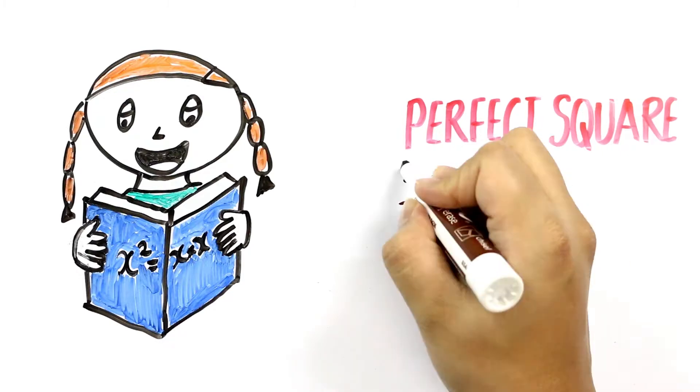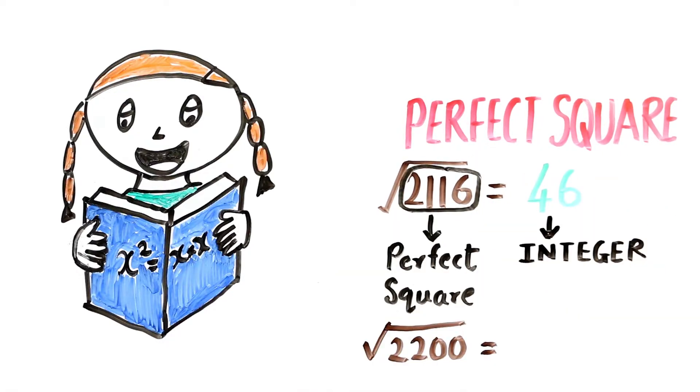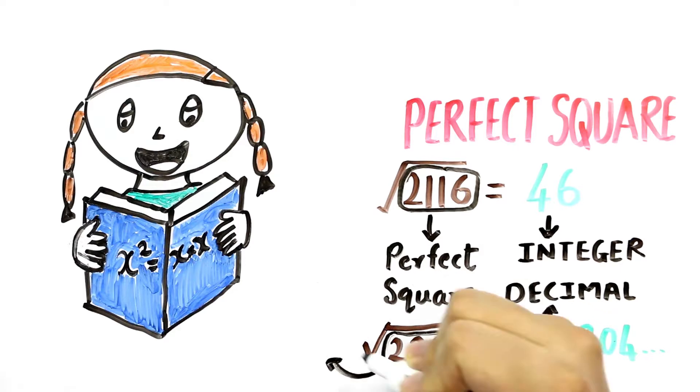Perfect squares are those numbers whose square root is always an integer. When the square root is in decimal form, we say that it's a non-perfect square.